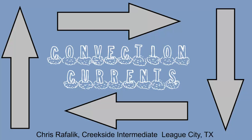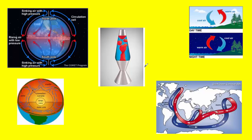Convection currents are one of the most important things that we study in science this year, because they're involved in so many different processes that happen on the earth. When we talk about convection currents, it explains how a lava lamp works — it's a good, easy demonstration for us to look at. It tells us how weather happens, how global winds happen, and what moves our hurricanes towards us here in the Gulf Coast.